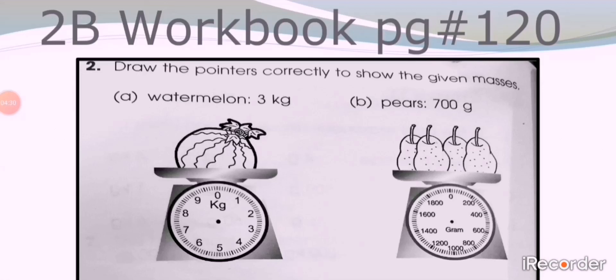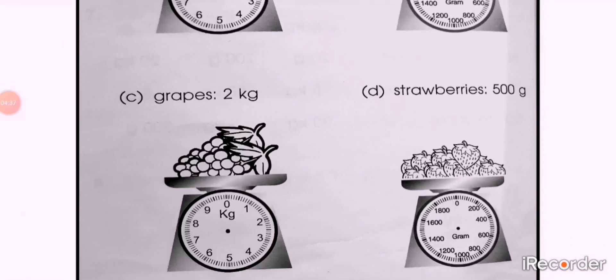Part C: grapes, 2 kg. Grapes are placed on kg scale and you will draw the pointer according to the given mass of the grapes. Part D: strawberries, 500 grams. Again a gram scale is here. You can see the markings, they are in 200, 400, 600, 800, and so on.